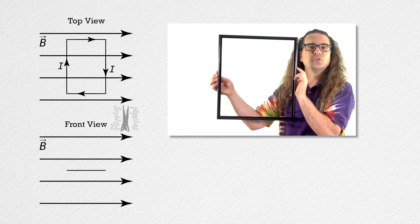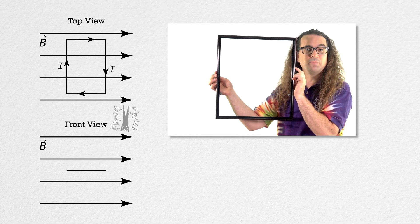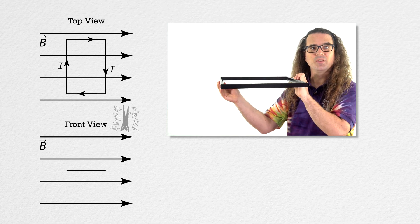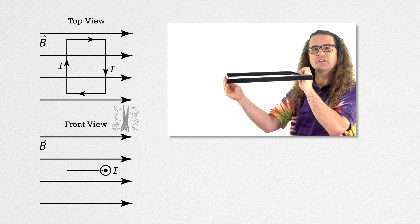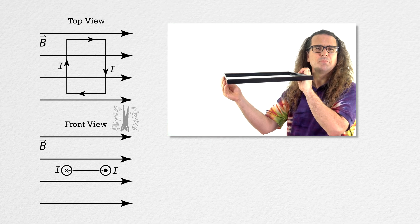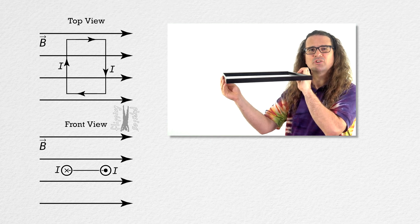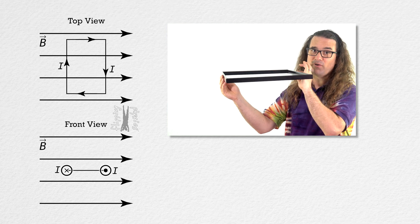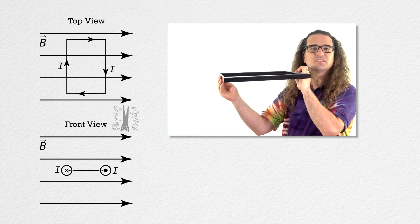In the top view, you can see the current we are placing on the loop is clockwise. This means, when looking at the front view, the current is coming out of the screen on the right side of the loop and the current is going into the screen on the left side of the loop. Because conventional current represents the motion of positive charges in the wire, we can use the right-hand rule to determine the directions of the induced magnetic forces on, in the front view, the left and right sides of the loop.